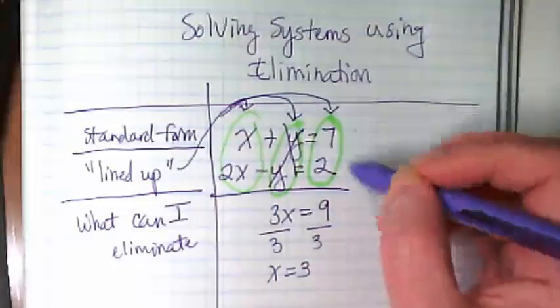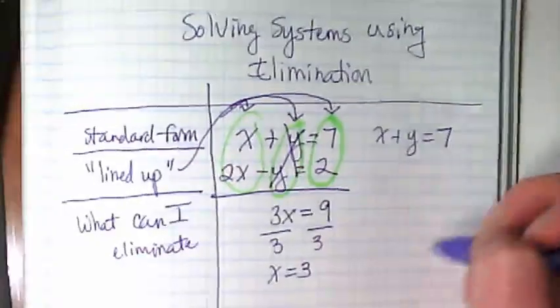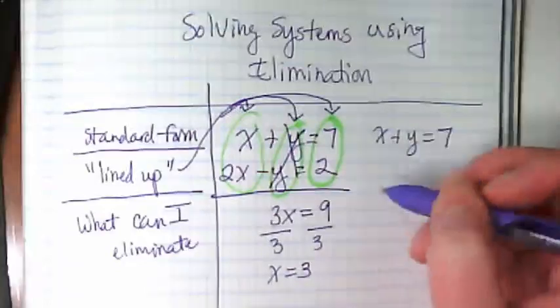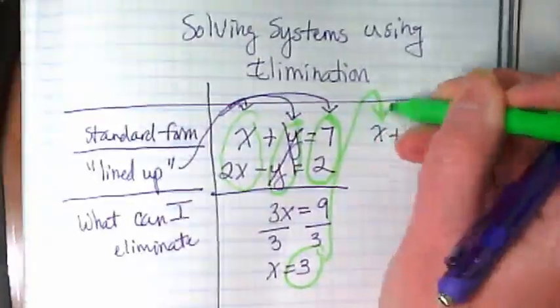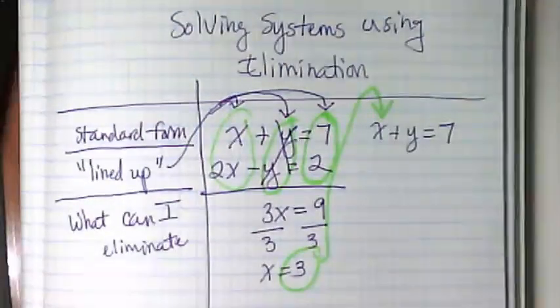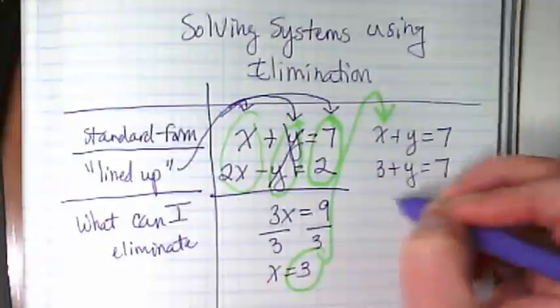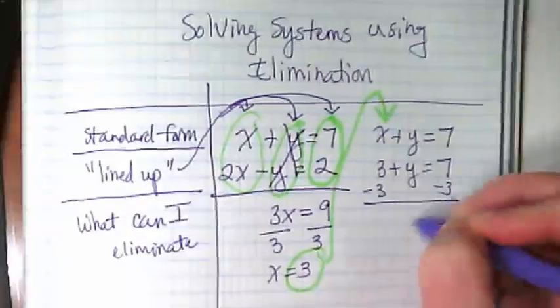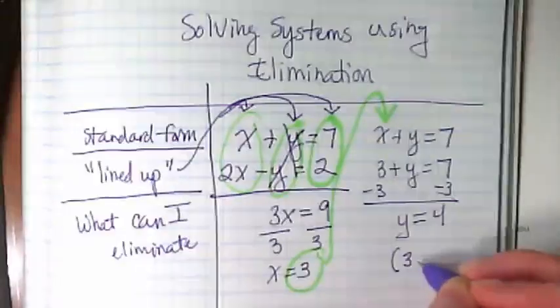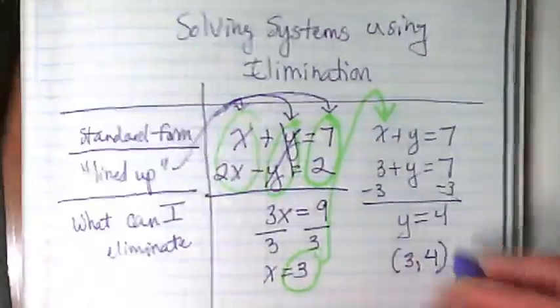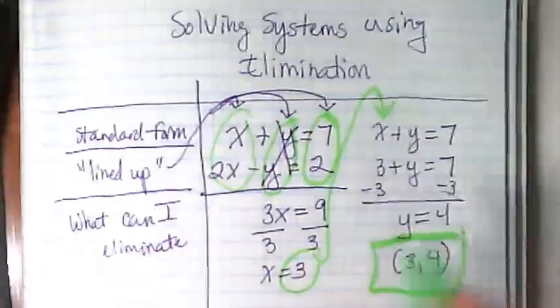So we're going to go back up to these two equations and pick one. I always pick the one that looks like it'll be the easiest to work with. And we're going to go back to substitution. We're going to sub in what we found for the X so we can find the Y. That means my solution is X is 3, Y is 4. We have solved a system of equations using elimination.